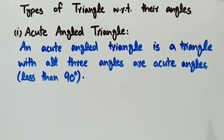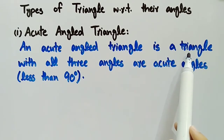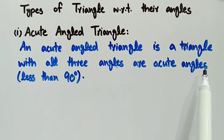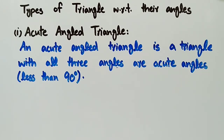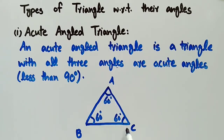Firstly, we will discuss acute angle triangle. An acute angle triangle is a triangle with all three angles as acute angles, which means that all of its three angles are less than 90 degrees. For example, consider this triangle. This is an acute angle triangle because all three of its angles are acute — that is, all three angles are less than 90 degrees.